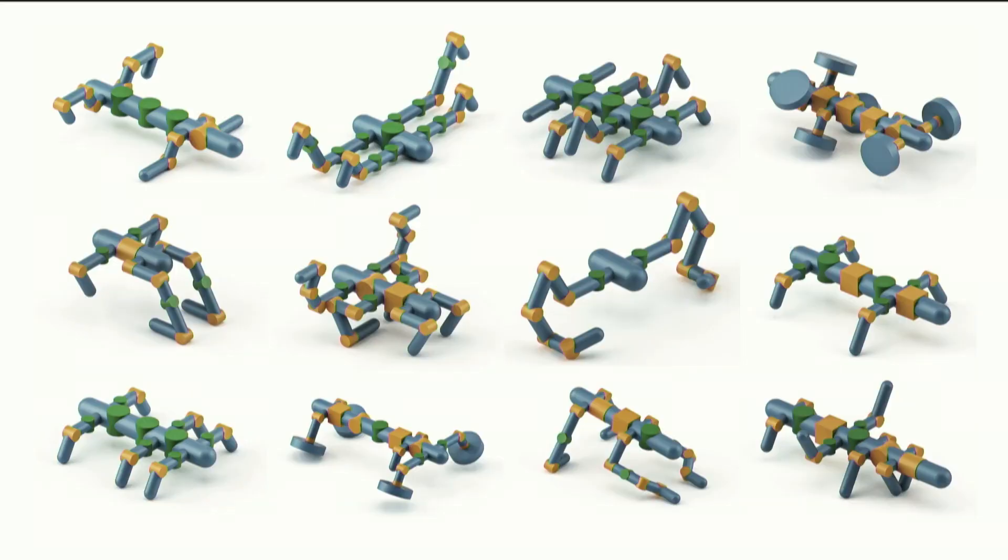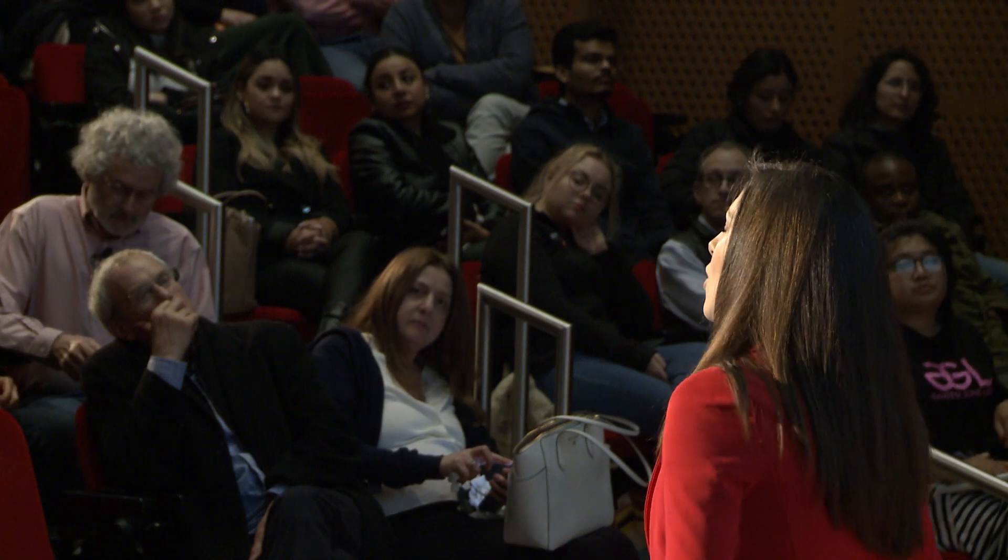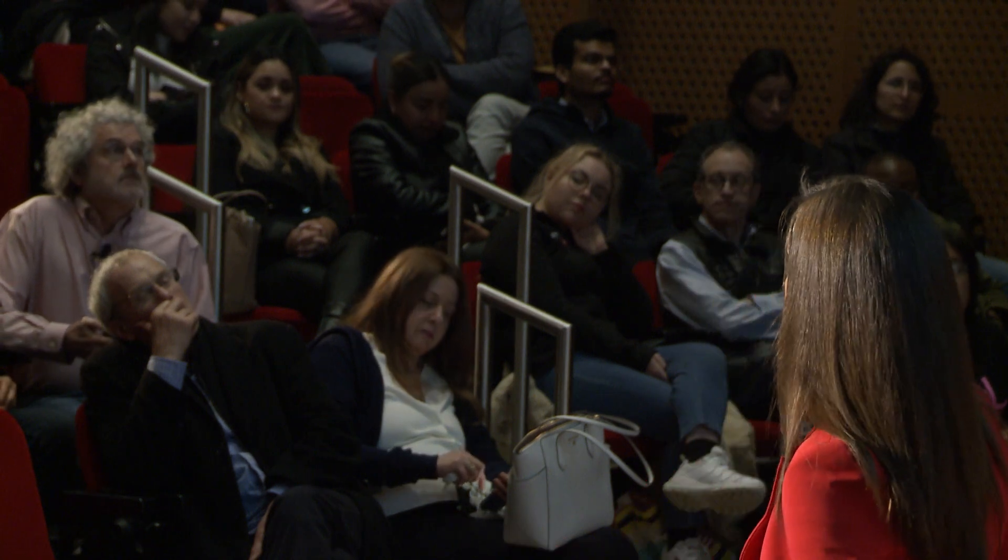It turns out that if we, surprisingly, take some ideas from natural language processing, we can create grammars that can automatically generate hundreds of thousands of robot designs. This grammar is inspired by animals and insects, and it consists of a set of rules for how and where you can add more robot parts — like body parts, tails, wheels, different joint types, and so on. This is all done automatically, and all the robots, because they are inspired by animals and insects, are able to walk.